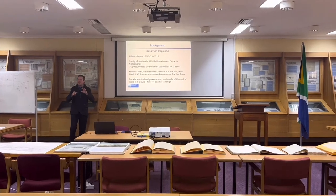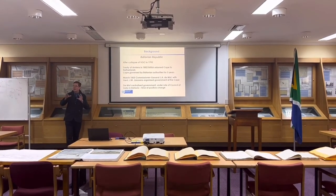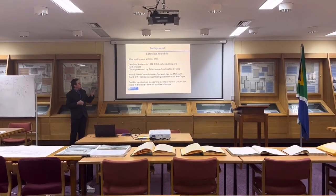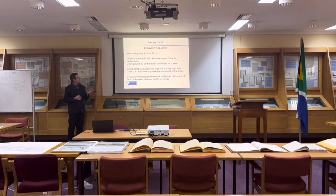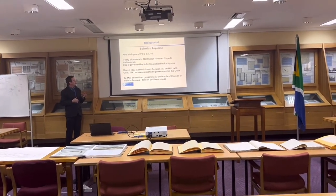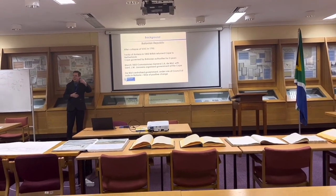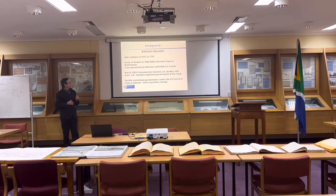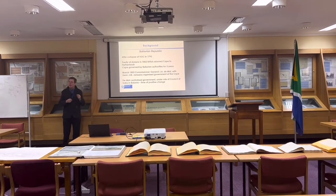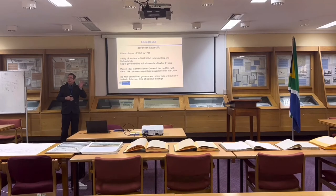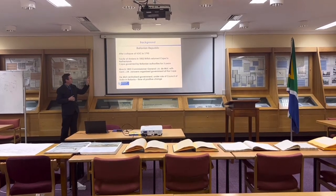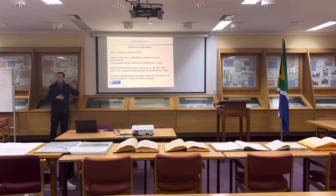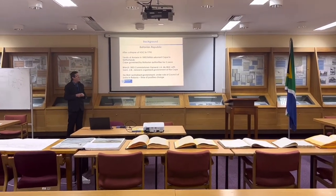Then, during the time of the Napoleonic Wars — the time of Napoleon Bonaparte — the Treaty of Amiens stipulated that the British would return the Cape back to the Netherlands. The Netherlands then decided that the Cape must fall under Batavian rule, and the Cape was governed by the Batavian authorities for three years.